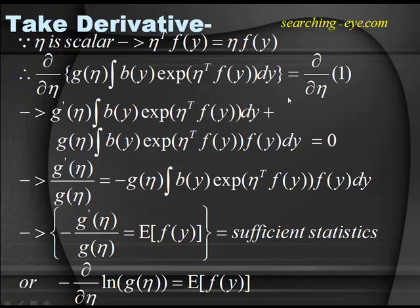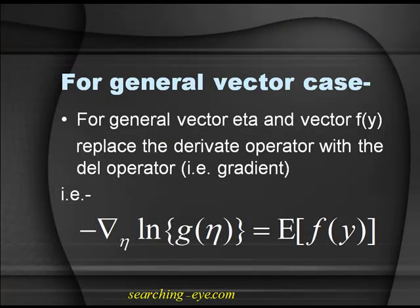This is known as sufficient statistics. Likewise, for the general vector case — with vector η and vector f(y) — replace the derivative operator with the del operator, that is the gradient. So negative gradient with respect to η of log g(η) equals the expected value of f(y). This is known as sufficient statistics.